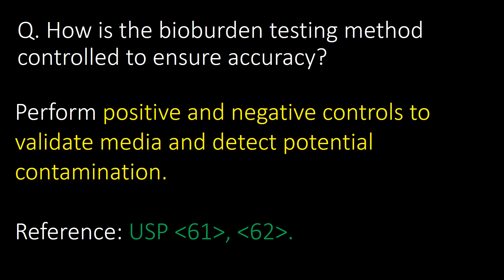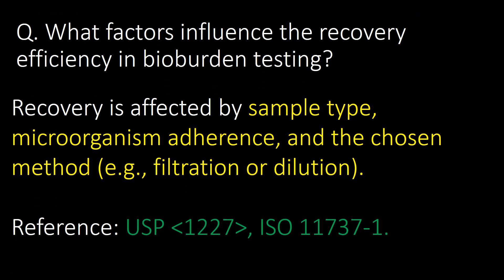How is the bioburden testing method controlled to ensure accuracy? Perform positive and negative controls to validate media and detect potential contamination. Reference USP Chapters 61 and 62. What factors influence recovery efficiency in bioburden testing? Recovery is affected by sample type, microorganism adherence, and the chosen method — for example, filtration or dilution. Reference USP Chapter 1227 and ISO 11737-1.